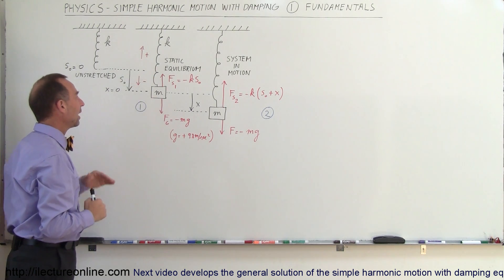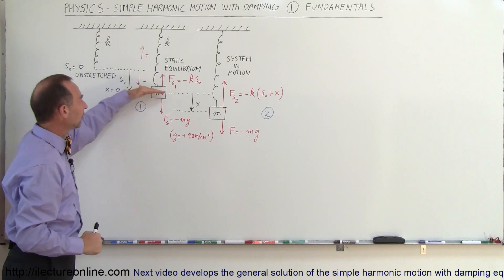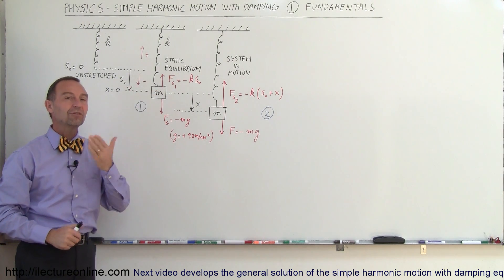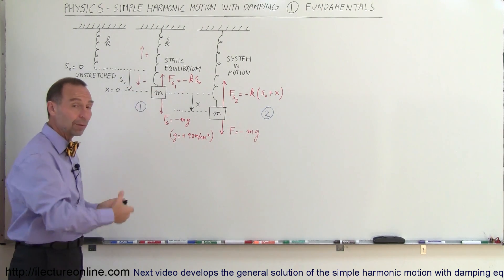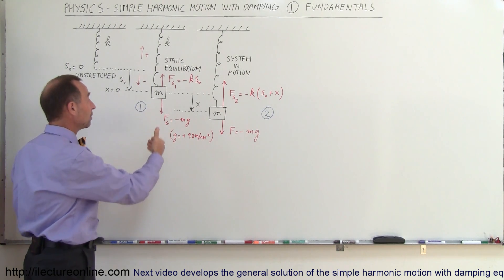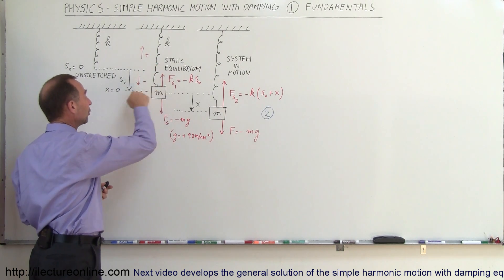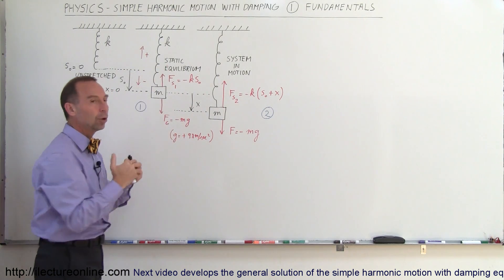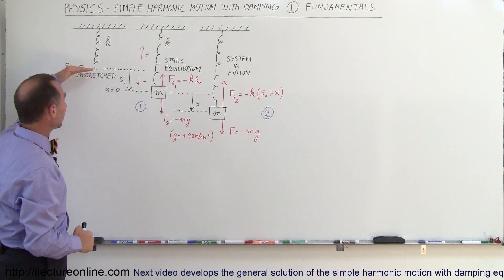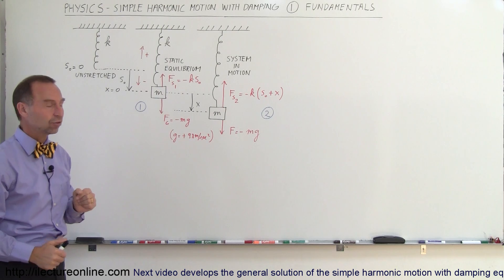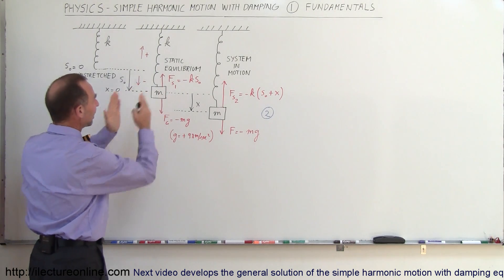The distance here is s sub zero and now we have this in equilibrium, meaning there's no motion. It's simply hanging from the string. The string has been stretched a distance s naught and x equals zero is the equilibrium point for its eventual motion. Once we put the object in motion, it's going to oscillate back and forth about this point. It's s sub naught below the position where the spring would be if there was no mass attached.